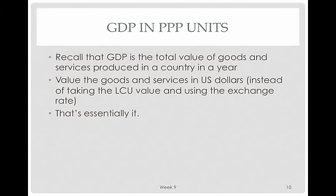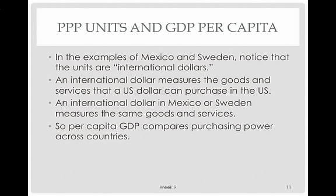Recall that GDP is the total value of goods and services produced in a country in a year. If you value those goods and services directly in US dollars — instead of taking the local currency unit value and using the exchange rate — that's basically what PPP is doing. It looks at what you have and puts a US dollar value on what it would cost to buy that same stuff in the United States. The units are called international dollars: an international dollar measures the goods and services that a US dollar can purchase in the US, and an international dollar in Mexico or Sweden measures those same goods and services. So per capita GDP in PPP terms compares purchasing power across countries.